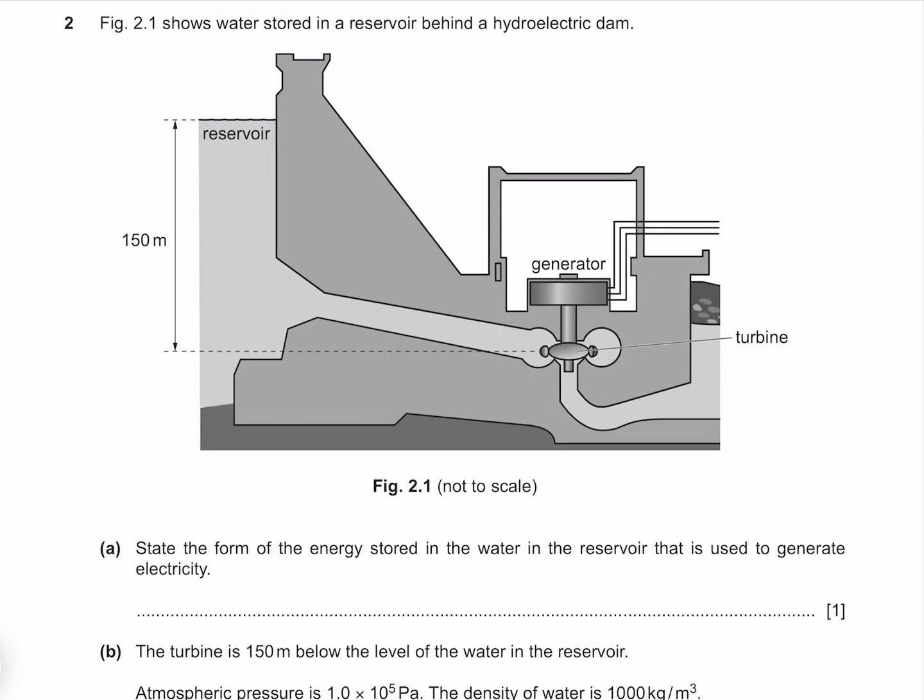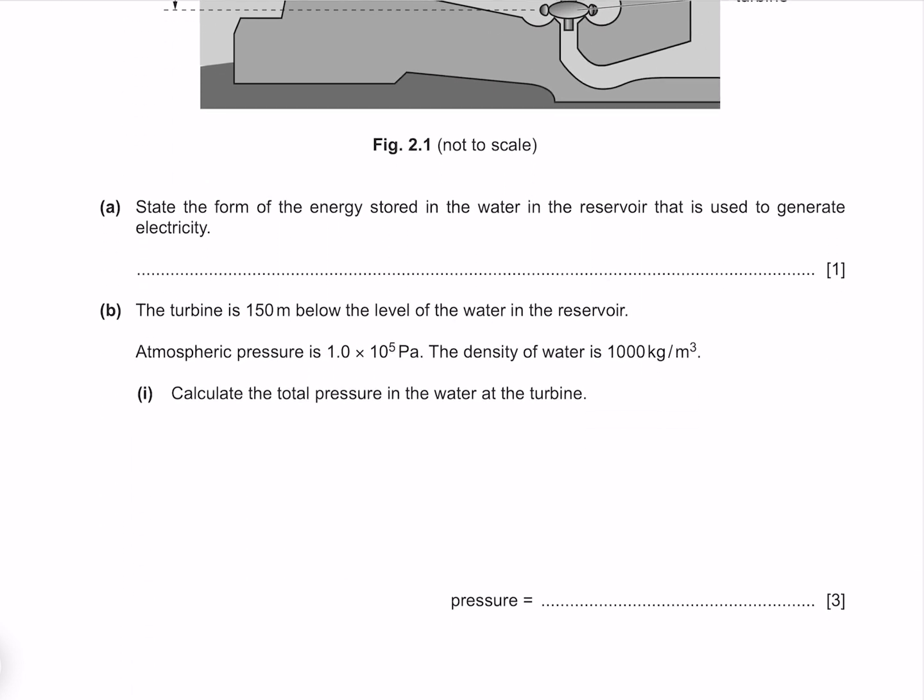Figure 2.1 shows water stored in a reservoir behind a hydroelectric dam. State the form of the energy stored in the water in the reservoir that is used to generate electricity. This is gravitational potential energy.